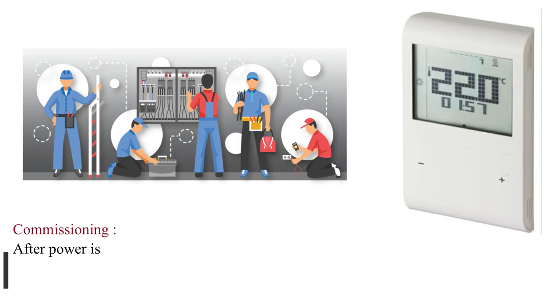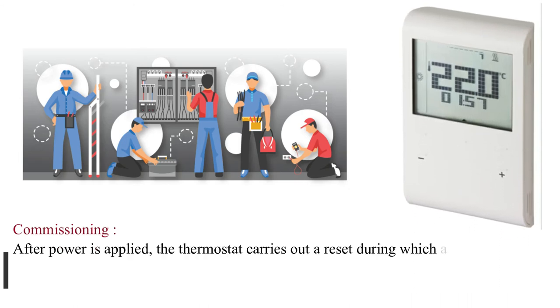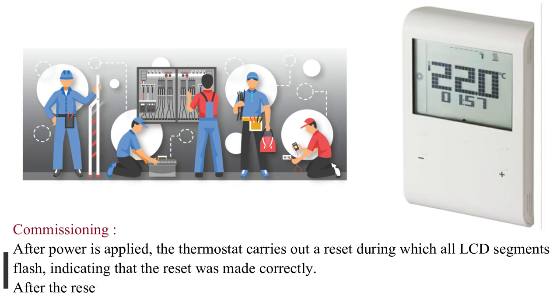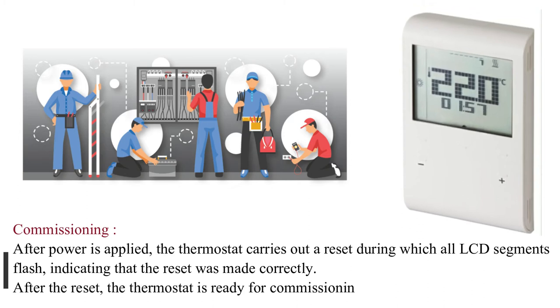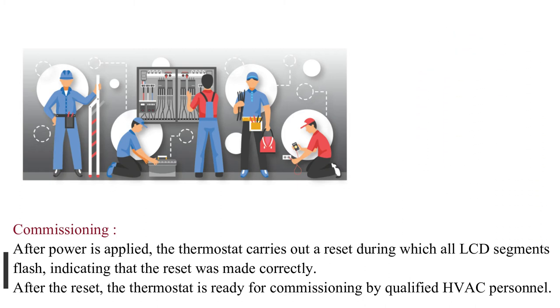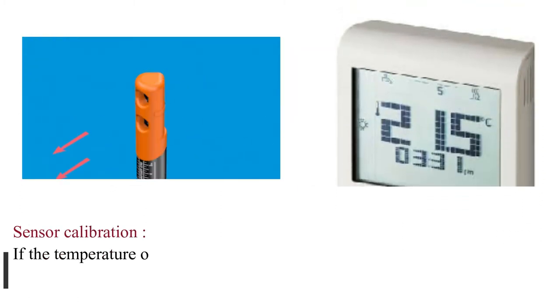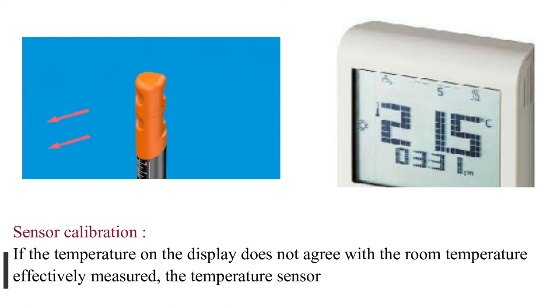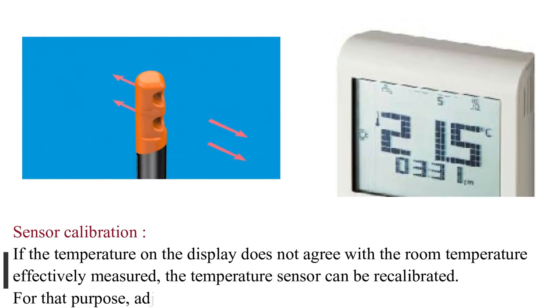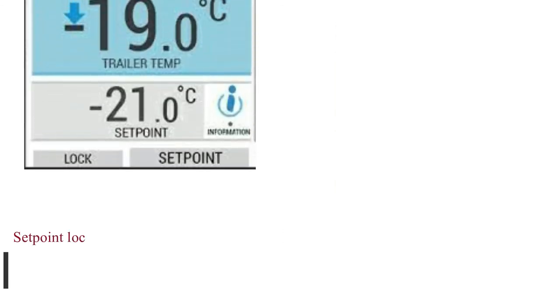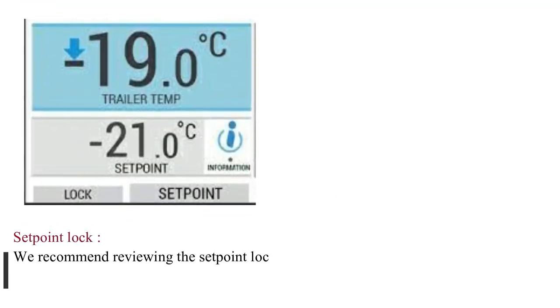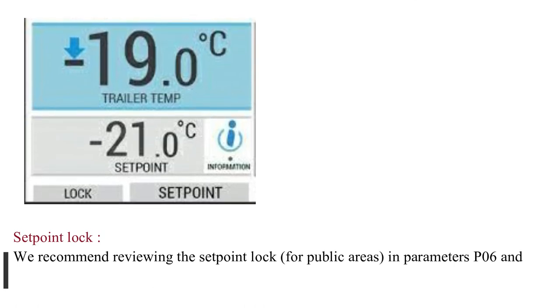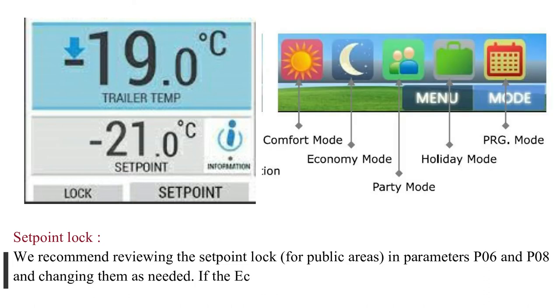Commissioning: After power is applied, the thermostat carries out a reset during which all LCD segments flash, indicating that the reset was made correctly. After the reset, the thermostat is ready for commissioning by qualified HVAC personnel. Sensor calibration: If the temperature on the display does not agree with the room temperature effectively measured, the temperature sensor can be recalibrated by adjusting parameter P04. Setpoint lock: We recommend reviewing the setpoint lock for public areas in parameters P06 and P08. If the economy setpoint is locked, then the comfort temperature setpoint cannot be set lower than the locked economy setpoint.